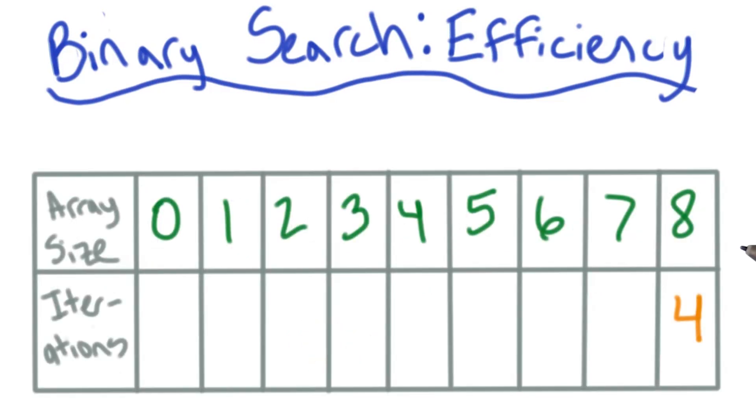Okay, so for an array size of 8, we have worst case four iterations. We can take the results from the first example too. There, it took us three steps to find something in an array of 7.